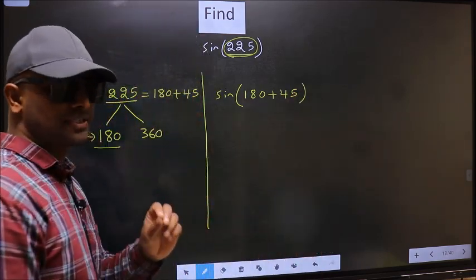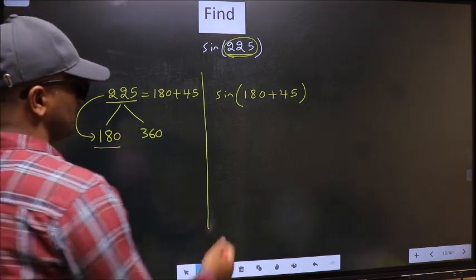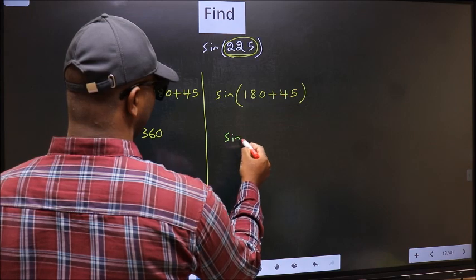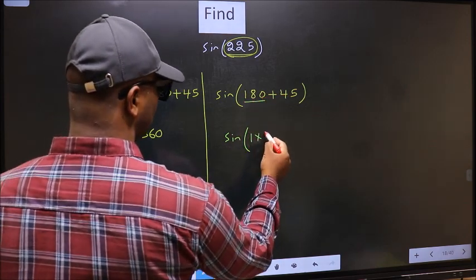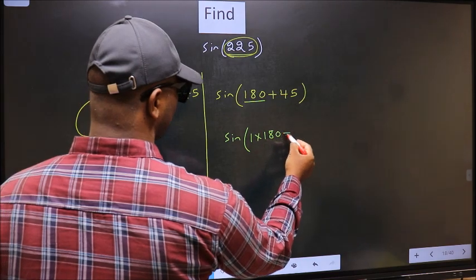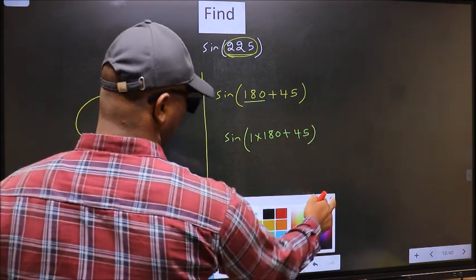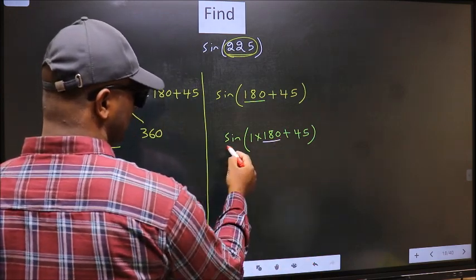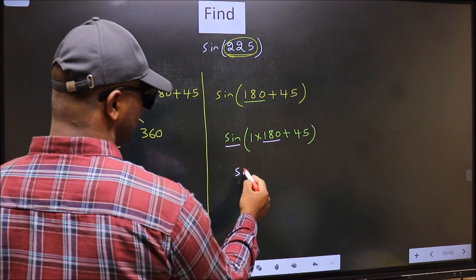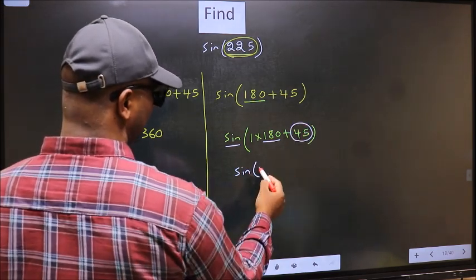This is your step one. Next, sin, in place of 180 I write 1 into 180 plus 45. Here we have 180, so sign is not going to change. It will remain sin, and inside we get 45.